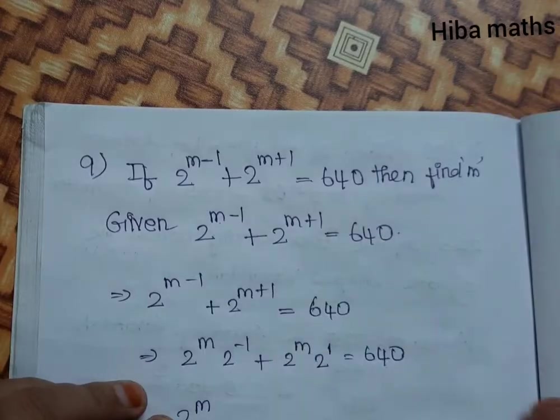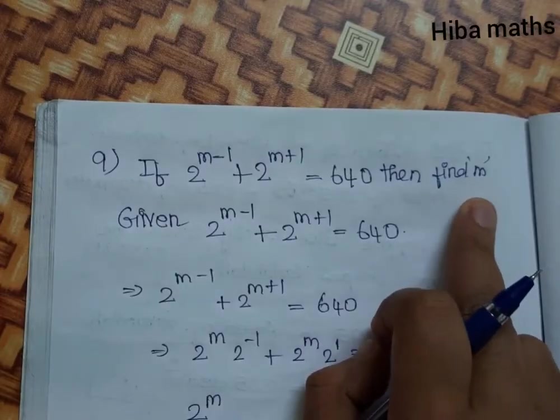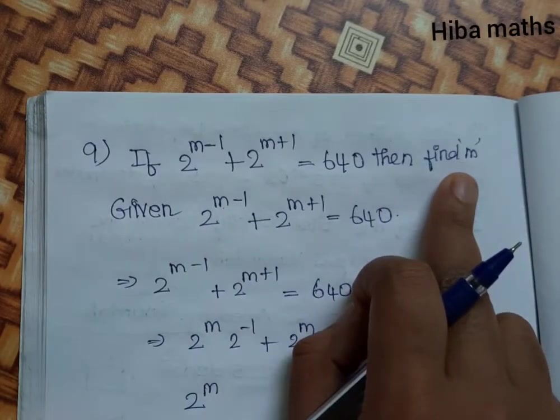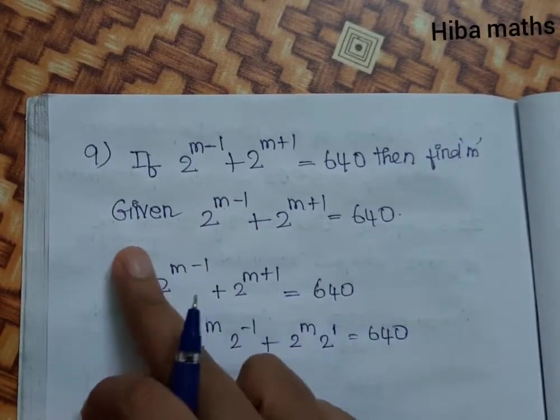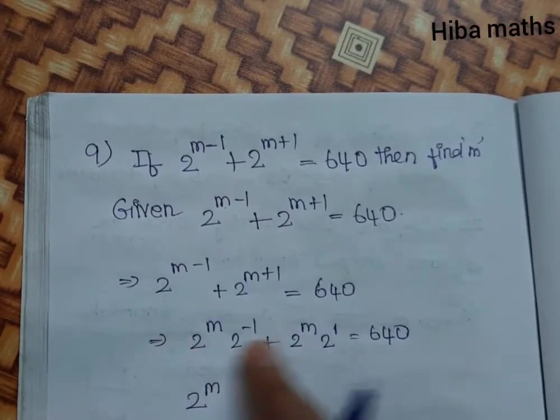If 2^(m-1) + 2^(m+1) = 640, then find m. Given this equation, we need to split it.